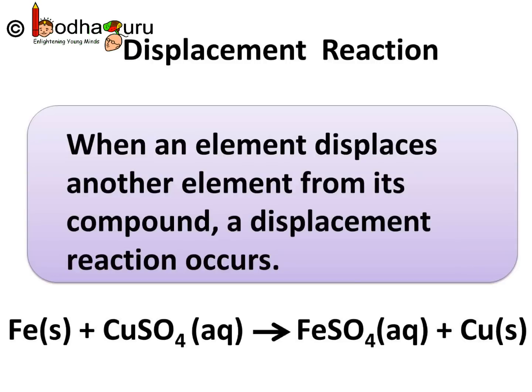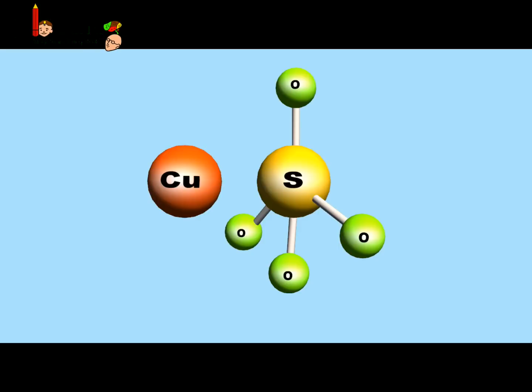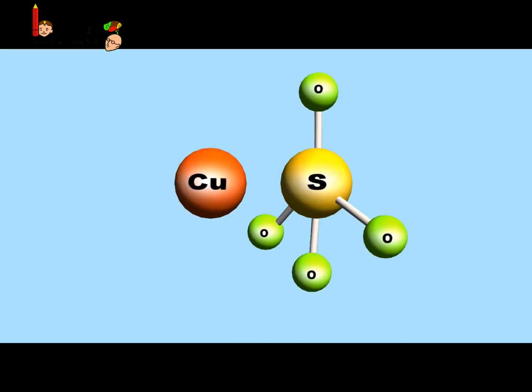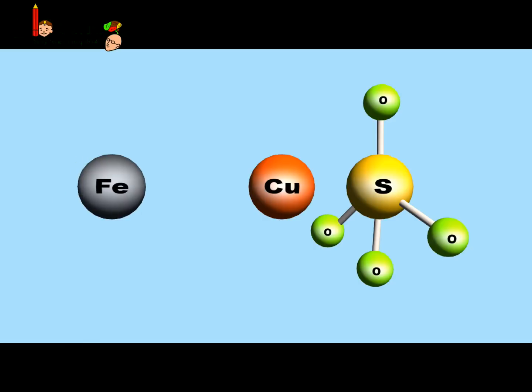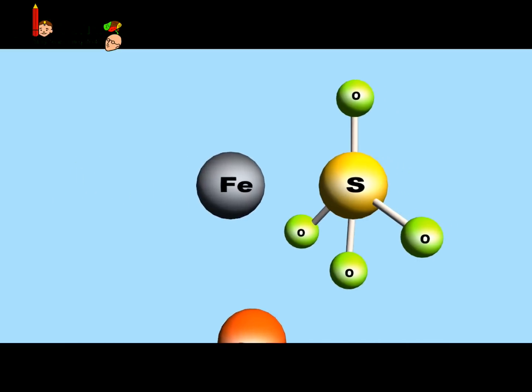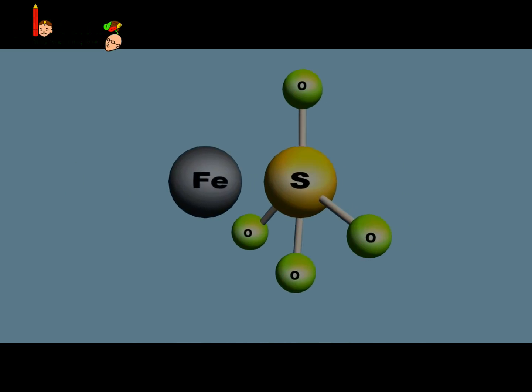So to sum up what we learnt today: when an element displaces another element from its compound, a displacement reaction occurs. For example, in this reaction Fe + CuSO4 gives FeSO4 + Cu — iron displaces copper from the copper sulfate solution and we get iron sulfate. That's all for now. Bye-bye.